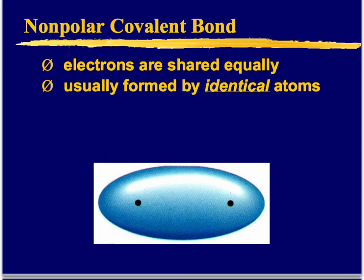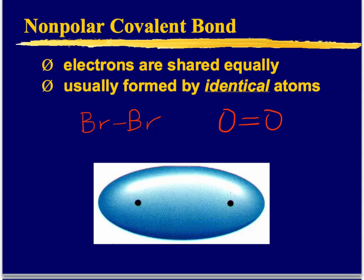A nonpolar covalent bond is where electrons are being shared equally, and these bonds usually form between identical atoms. You can see the nucleus of each atom with the blue shaded area showing the electron distribution — it's a symmetrical picture showing equal sharing. This might be bromine and bromine, or oxygen and oxygen. Generally, nonpolar covalent bonds form when you have the same element involved.